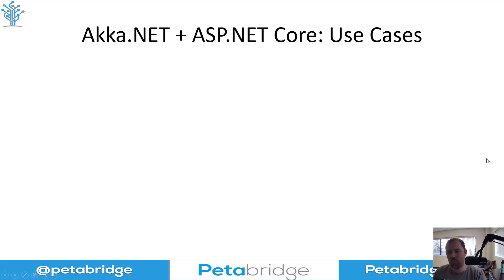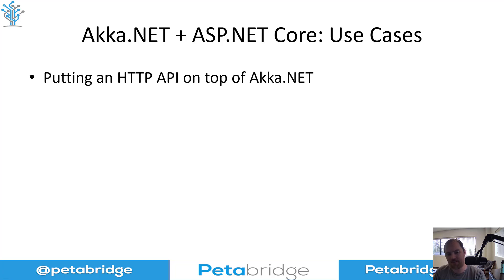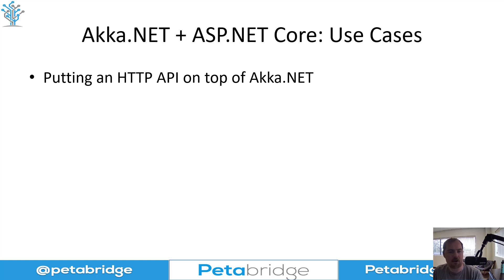The first thing you might want to ask is: what are the use cases for working with ACA.NET and ASP.NET together in the same process? One example might be putting a web API on top of your existing ACA.NET applications. This is a really common technique for securely exposing functionality to the public, which is something ASP.NET does really well. It also makes it possible for non-ACA.NET applications to interact directly with an ACA.NET cluster.